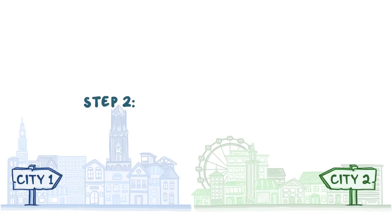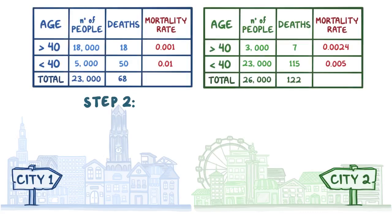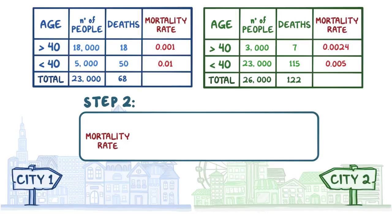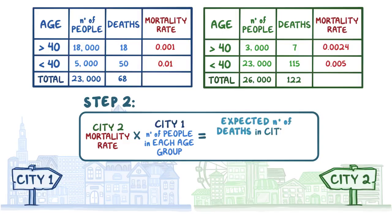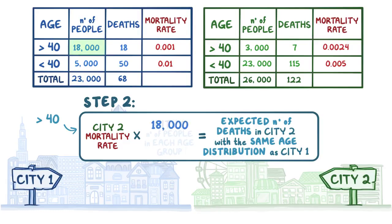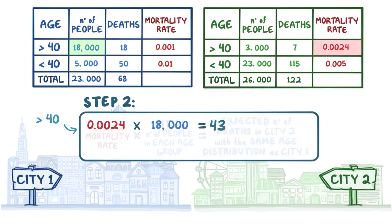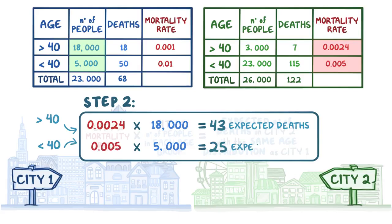In step 2, we multiply the age-specific mortality rate from the population of interest, City 2, by the number of people in each age group from the reference population, City 1, to get the expected number of deaths in City 2 — that is, the number of deaths you would expect in City 2 if it had the same age distribution as City 1. In the over-40 age group, 18,000 people times .0024 gives us 43 expected deaths. In the under-40 age group, 5,000 people times .005 gives us 25 expected deaths, for a total of 68 expected deaths.